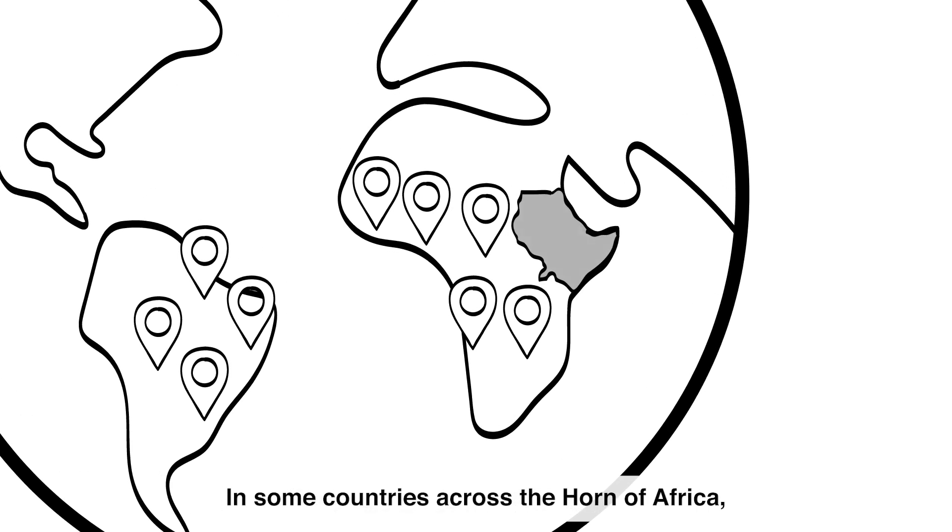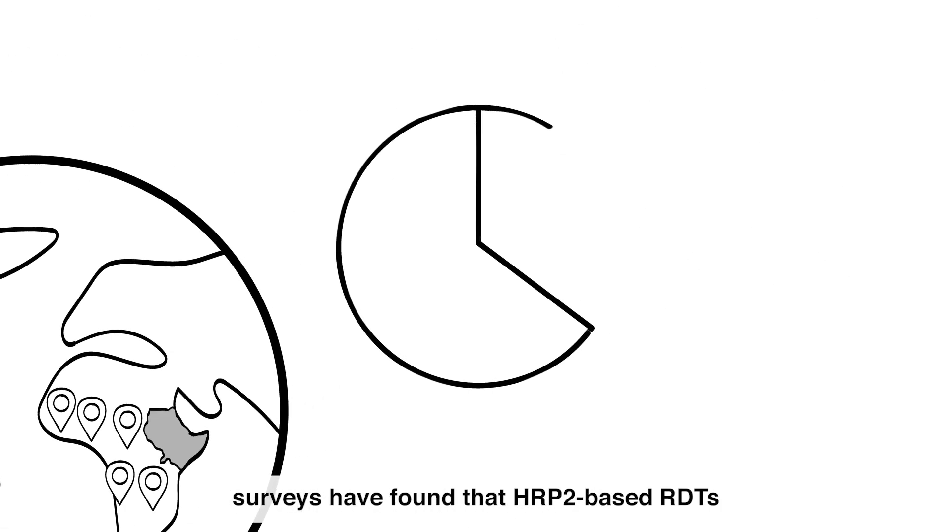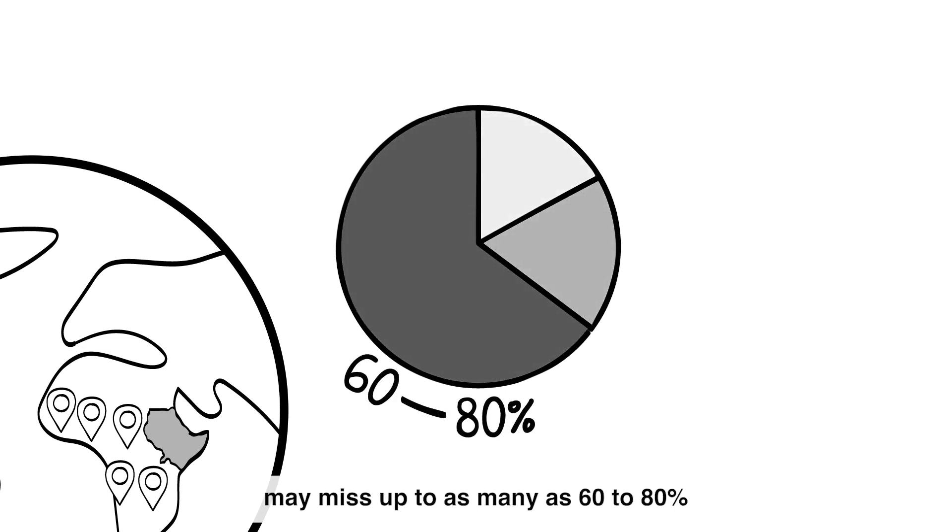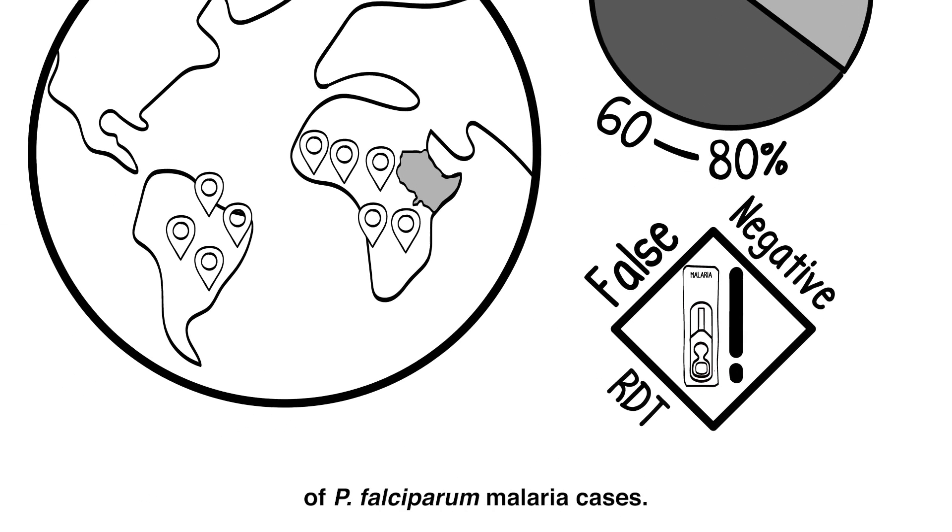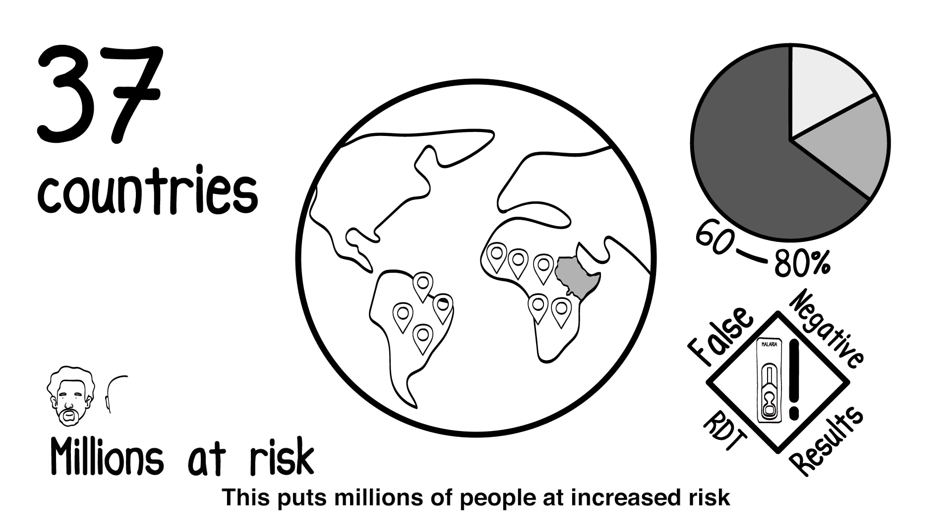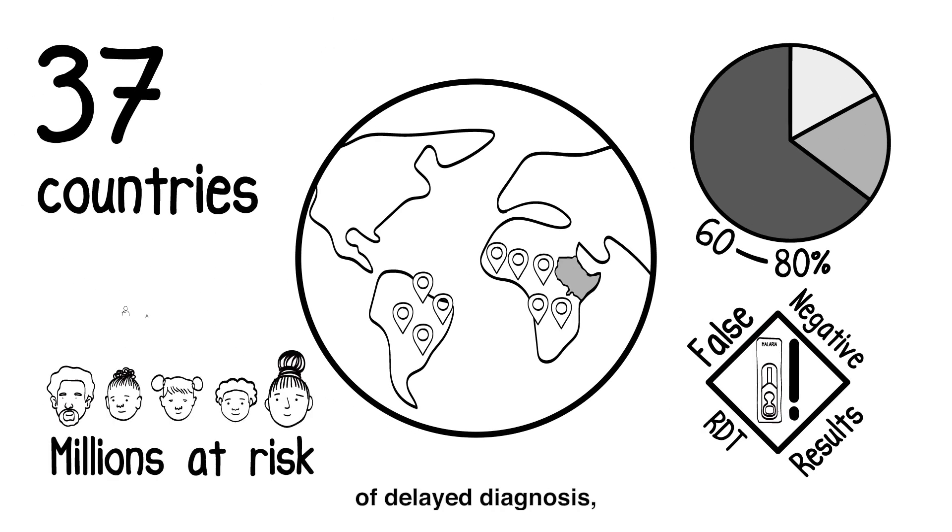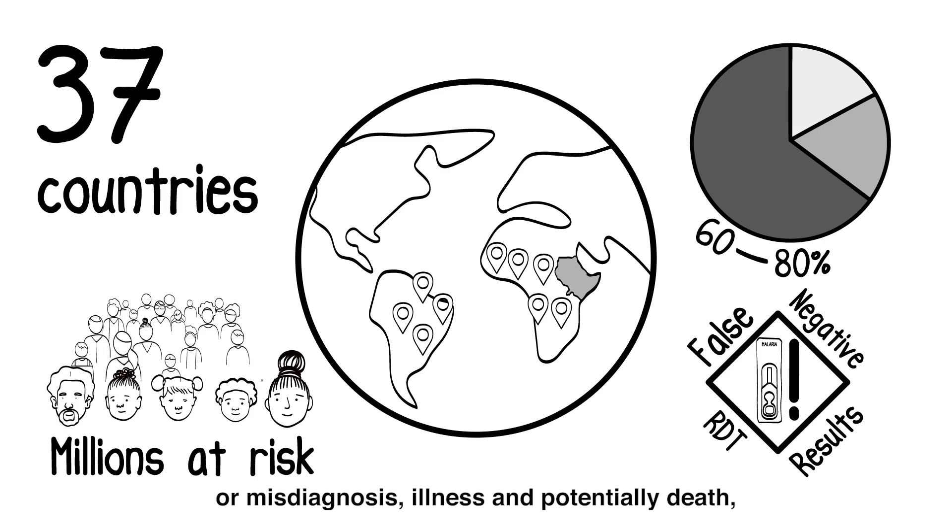In some countries across the Horn of Africa, surveys have found that HRP2-based RDTs may miss up to as many as 60 to 80% of P. falciparum malaria cases. This puts millions of people at increased risk of delayed diagnosis or misdiagnosis, illness, and potentially death, and can cause epidemics.